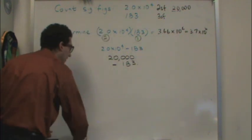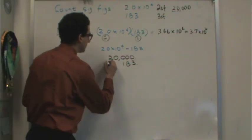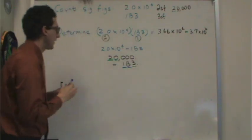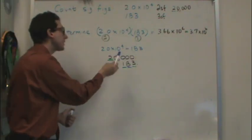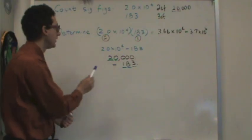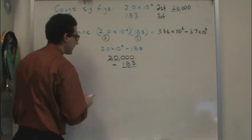Now remind yourself, this has two sig figs. I'll underline them in blue, and this has three. I know the way I wrote the 20,000, it looks like there's only one, but I know it's from this number. So, 20,000 minus 183. Let's do that.